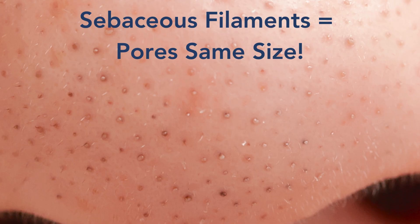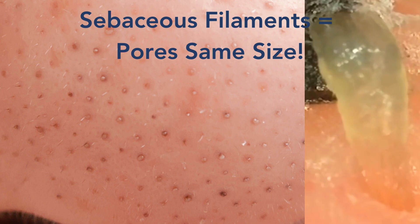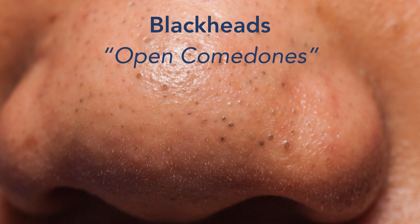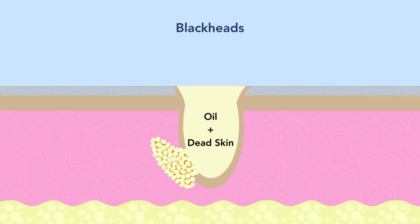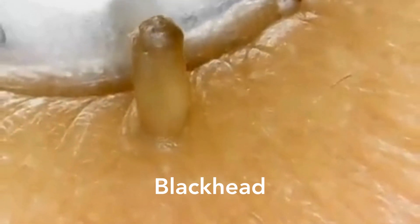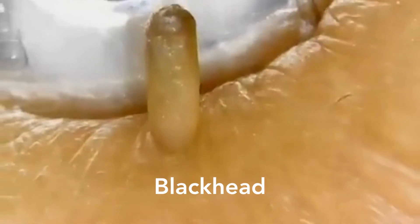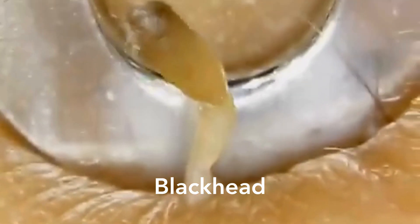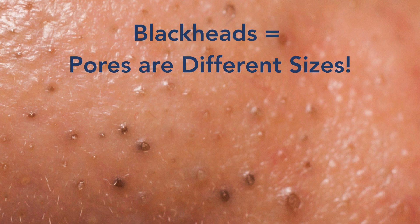Sebaceous filaments: the pores are the same size and have that jelly-like texture. Now looking at this nose — totally different. The pores are different sizes, so these are blackheads, or open comedones. With blackheads, the oil and dead skin completely fill the entire pore, and the top oxidizes and turns black.